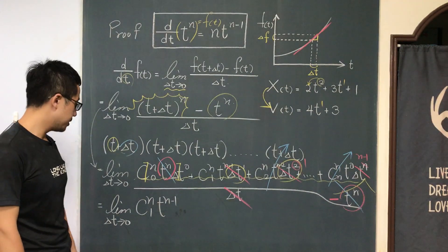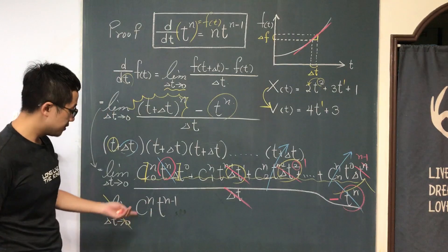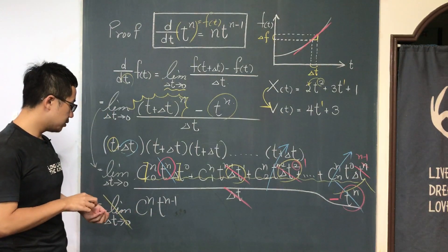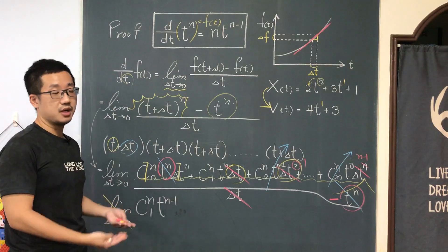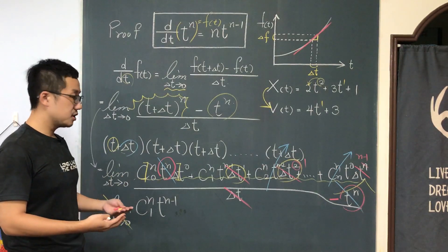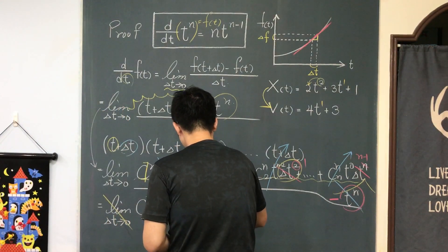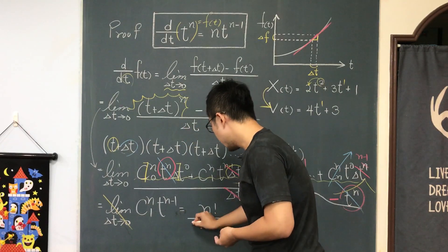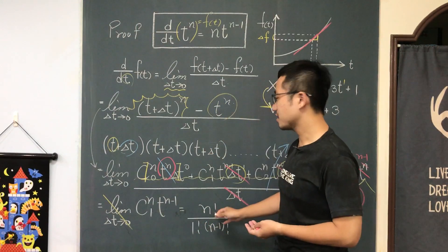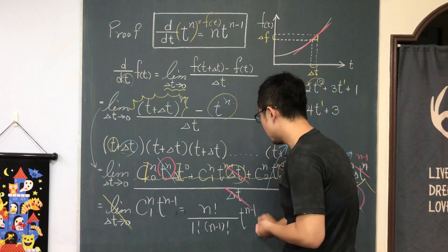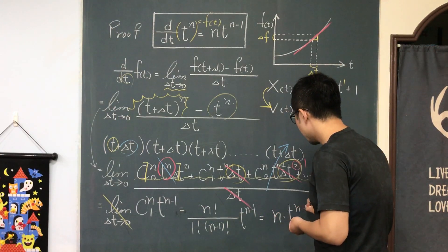We are so close! Because the remaining term has no delta t in it, you can forget about the limit — this term doesn't depend on delta t. So the result is n choose 1 times t to the n minus 1. And n choose 1 equals n factorial divided by (1 factorial times (n−1) factorial), which is simply n. So the derivative of tⁿ is n times t to the n minus 1. Congratulations — you have done the proof!